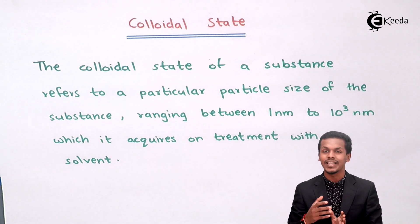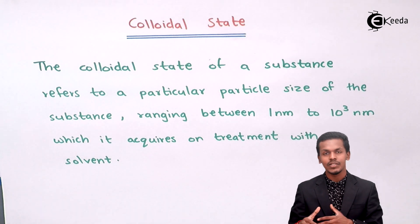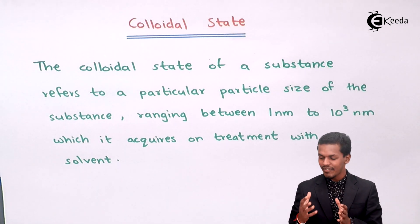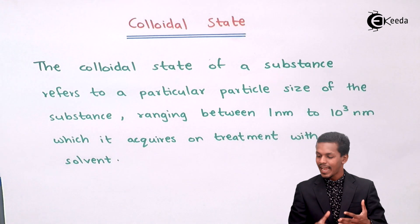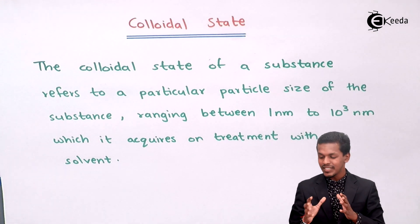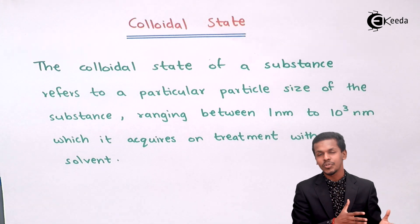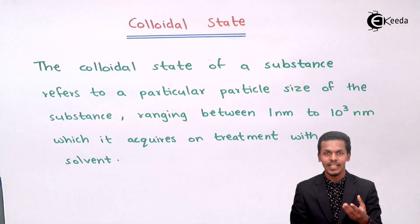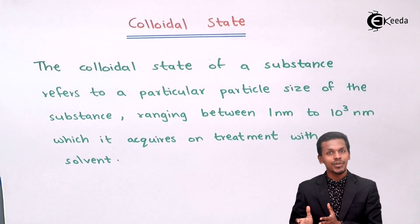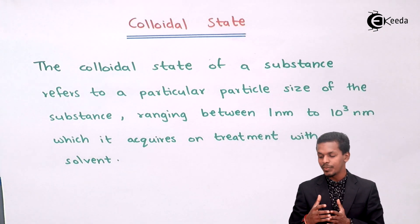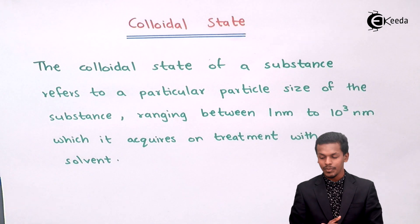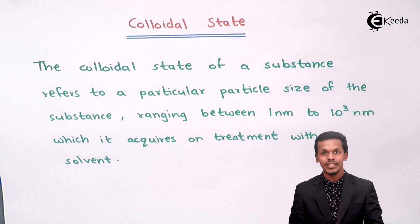After Colloidal State we will move to suspension, along with certain related topics. The colloidal state has particles ranging from 1nm to 10³nm that are dispersed in a particular solvent — so it is a kind of solution, but not a true solution. True solution has particle size less than 1nm, which cannot be observed with the naked eye, whereas colloidal state particles can be observed using a microscope.